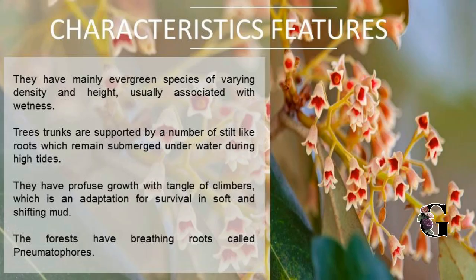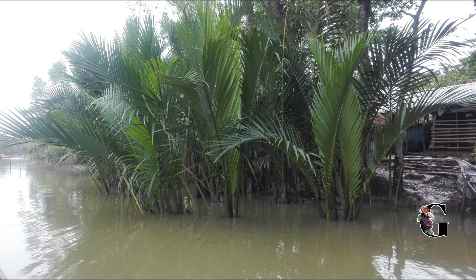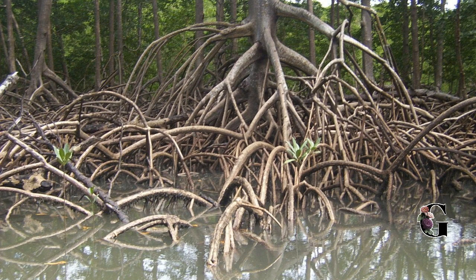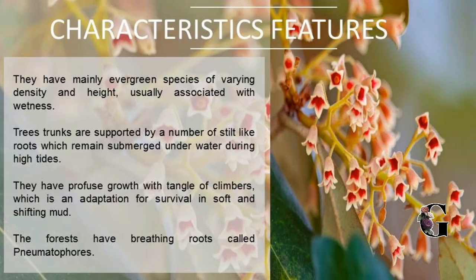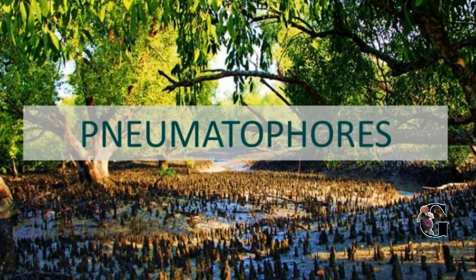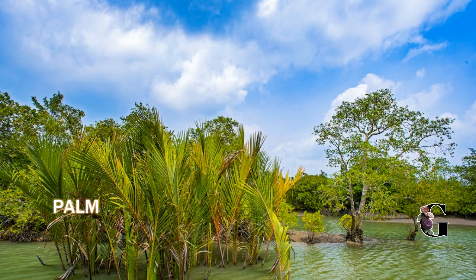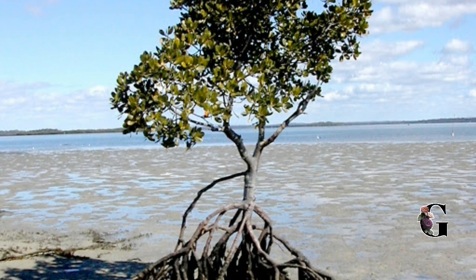The tidal forest of India has many unique features. The trees are mainly evergreen species and are usually associated with wetness. The tree trunks have stilt roots which remain submerged underwater during high tides. The forest also has breathing roots called pneumatophores — vertical roots that enable the trees to breathe when the other roots are submerged under saline water.